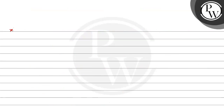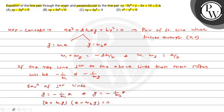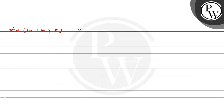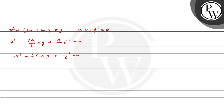इसके combined equation को लिखें तो: (x + m1y)(x + m2y) = 0, जिसे solve करने पर x square + (m1 + m2)xy + m1*m2 * y square = 0. m1+m2 और m1*m2 का relation use करने पर: minus 2h by b into xy plus a by b into y square equal 0. यानि b x square minus 2h xy plus a y square equal 0।